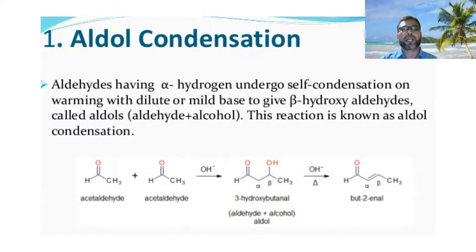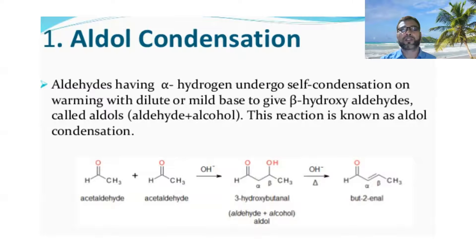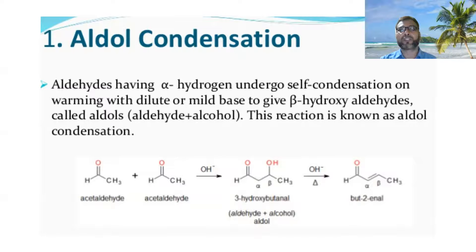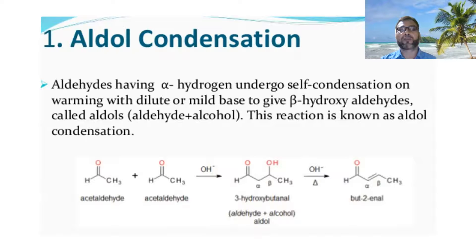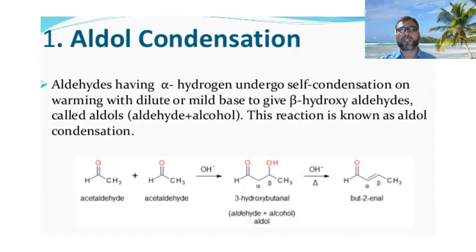You know, aldehydes have the functional group CHO. Aldehydes having alpha-hydrogens — what is the meaning of alpha-hydrogens? The CHO group we leave aside; we have another CH3 group, and those hydrogens are known as alpha-hydrogens. So, aldehydes having alpha-hydrogens undergo aldol condensation on warming with dilute or mild base, to give a beta-hydroxy aldehyde called aldols — aldehyde plus alcohol. This reaction is known as aldol condensation.